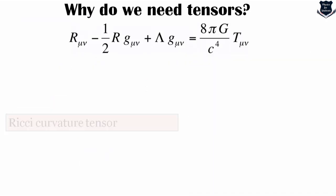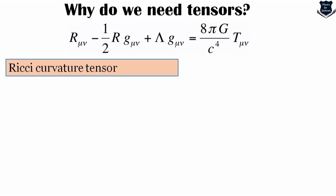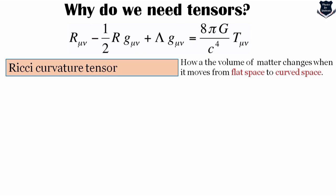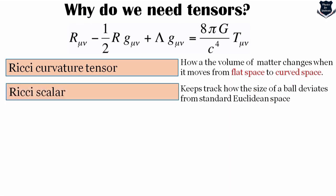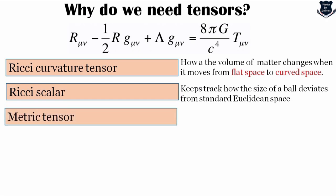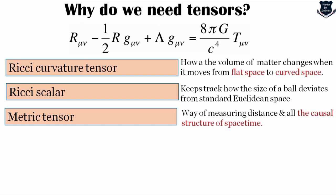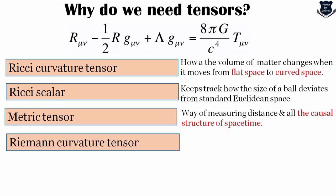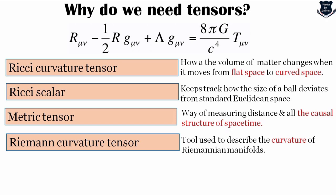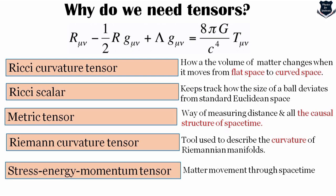When we talk of Einstein's field equations, the entire genre is embraced by tensors. We have the Ricci curvature tensor, which tells how the volume of matter changes when it moves from flat to curved space. We have the Ricci scalar, which keeps track of how the size of a volume deviates from standard Euclidean space. We have the metric tensor for measuring distances and causal structure. We have the Riemann curvature tensor as a tool to describe the curvature of Riemannian manifolds. And we have the stress-energy-momentum tensor, which tells how matter moves through spacetime.